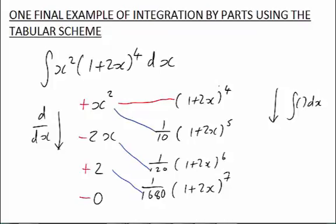The presence of the zero in the bottom of the left-hand column tells us we can stop there. So now all I have to do to get the answer is to write out the product of the things at the end of each of the blue lines, adding those up as I go.